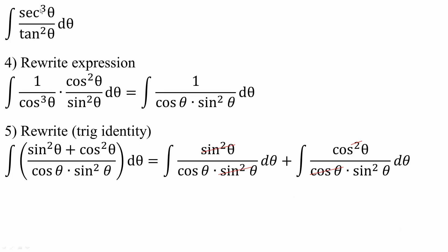Secant cubed theta equals 1 divided by cosine cubed theta. Now tan squared theta equals sine squared theta divided by cosine squared theta, and so it flips to cosine squared theta divided by sine squared theta d theta. The cosine squared theta terms cancel, reducing the exponent from 3 to 1, giving us the integral of 1 divided by cosine theta times sine squared theta d theta.